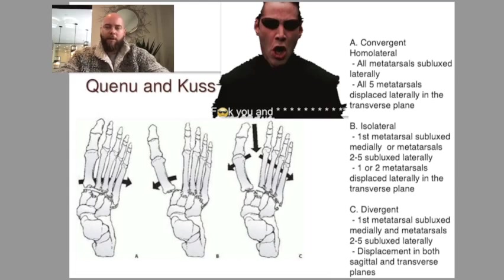Okay, this is the Quenu and Kuss classification of Lisfranc fracture dislocations. This one's high yield because Lisfranc was one of the more prominent injuries in podiatry, and so you're going to need to know how to classify them. There's two classifications, the other one is the Hardcastle classification. I'll make a separate video for that one. But Quenu and Kuss is the easier classification, so if you're asked, start with this one.